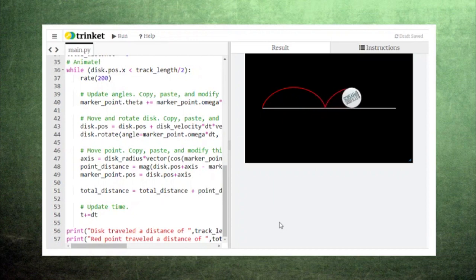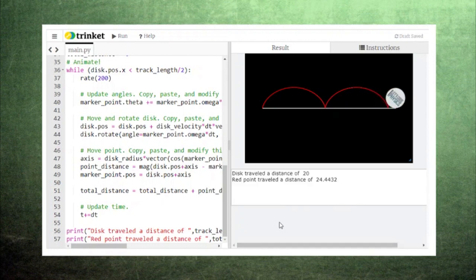The trail left behind by the marker point traces out one of the most interesting shapes in geometry, a cycloid. This cycloid rises up quickly as the marker point approaches the top of the disc, and abruptly changes direction every time it touches the track.